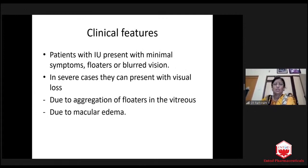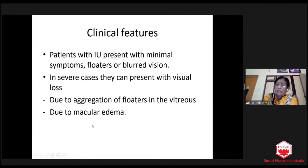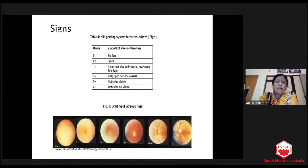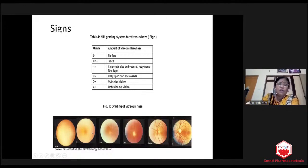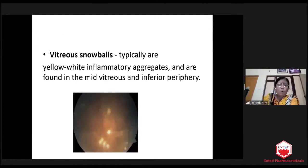In severe cases, they present with total vision loss — at that time it is very difficult to handle. Most of the time, defective vision is because of macular edema. According to the Nussenblatt classification, they may have zero cells or trace cells where you will be seeing the nerve fiber layer. In 1+, you will not see the nerve fiber layer. In 2+, even the vessels are seen faintly. In 3+, you will see the disc faintly. In 4+, you will not see anything.